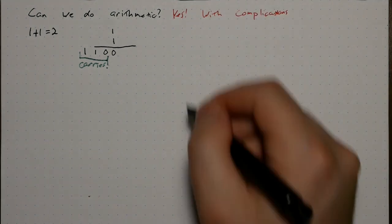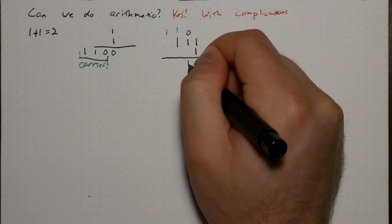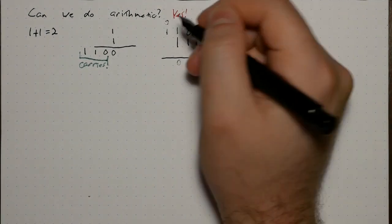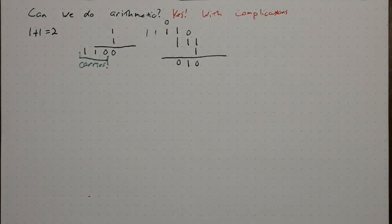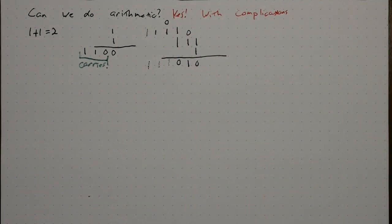Well, let's try adding 111 to 1. 1 and 1 is 0, carry 110. 0 and 1 is 1. 1 and 1 is 0, carry 110. And finally, we just have 1 and 1 and 1.